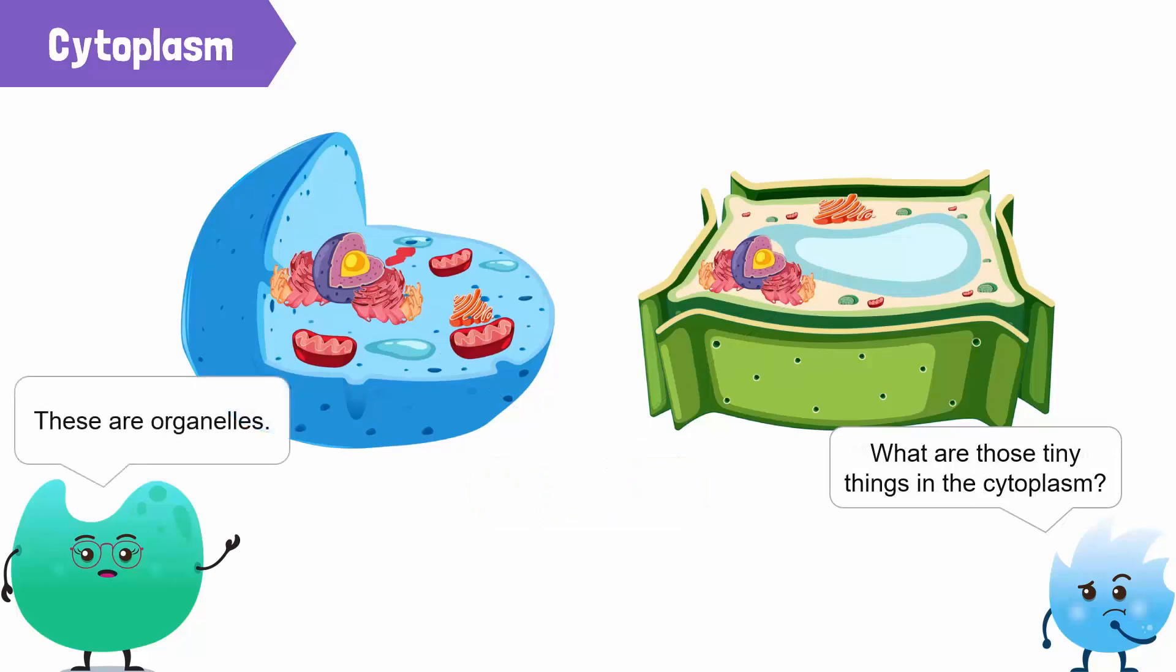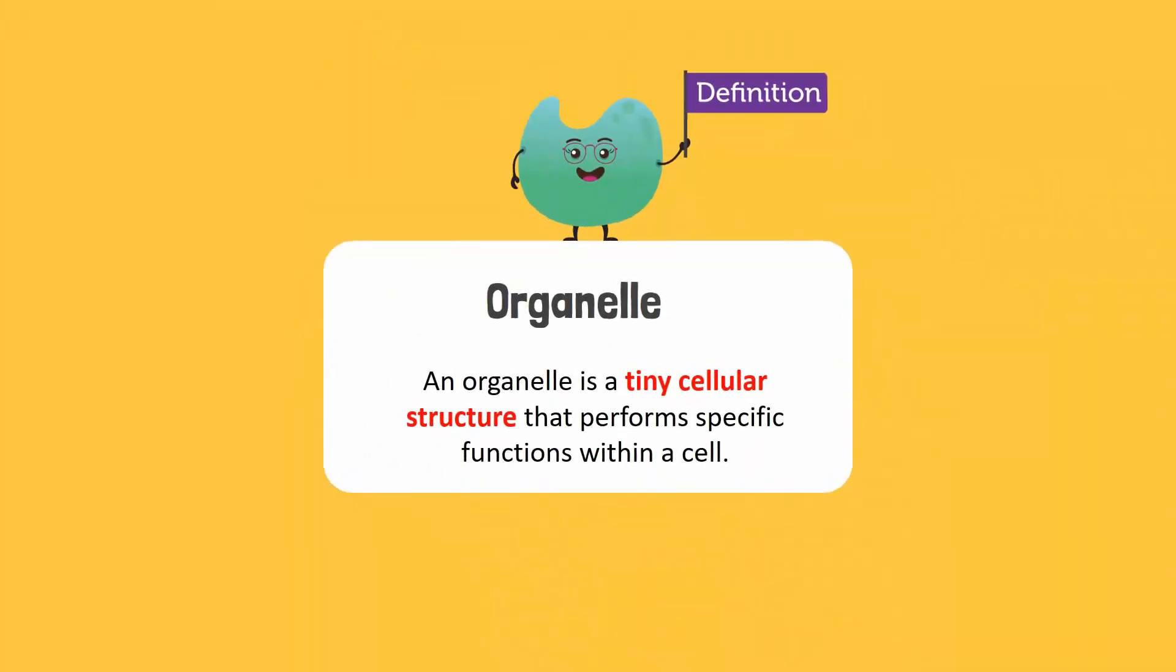What are those tiny things in the cytoplasm? Good observation. These tiny things are called organelles. An organelle is a tiny cellular structure that performs specific functions within a cell.